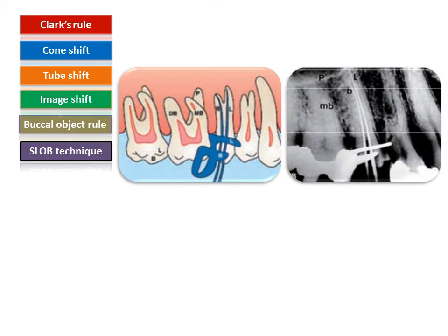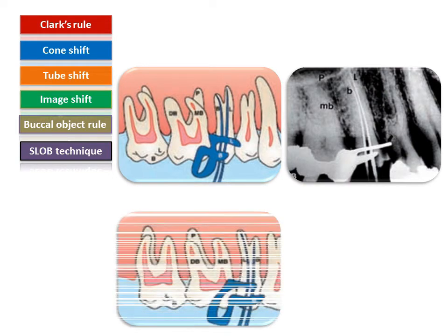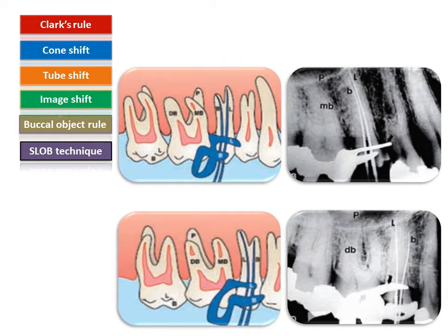In another example, files are inserted in the second premolar. In the first image, the mesiobuccal root of the first molar appears superimposed on the palatal root. When the orientation is changed, the second image shows the palatal root and mesiobuccal root clearly separated, allowing easy identification of the root canal in the mesiobuccal root.